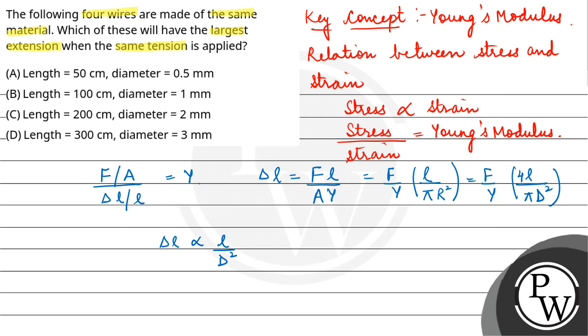So delta L jo hai, that is directly proportional to L by d square. So aapko yeh batana hai ki agar hamne same force lagaya hai, so sabhi four wires ke liye aapka F same hai, Young's modulus same ho ga. Aapko yeh dekhna hai ki kaunsi wire ka L upon d square zyadha hai, usi ka extension zyadha ho ga.